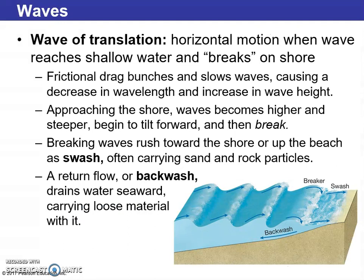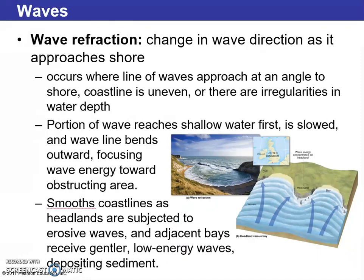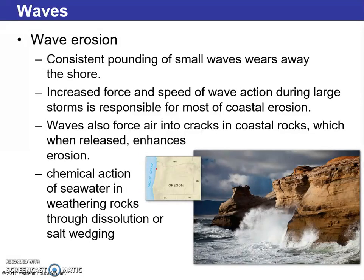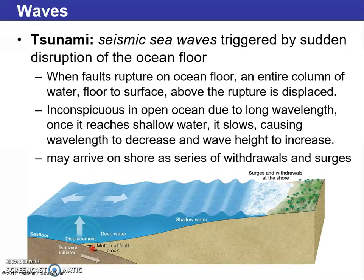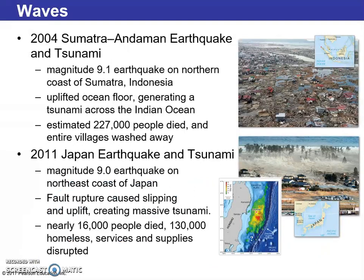We have wash and backwash — the wash is going forward and the return flow is called backwash. Wave refraction is the change of wave direction as a wave approaches the shore, kind of bouncing off when it bottoms out. Wave erosion causes wear and tear on the coast. A tsunami is a seismic sea wave triggered by a sudden disruption of the ocean floor, usually an earthquake or seismic activity.